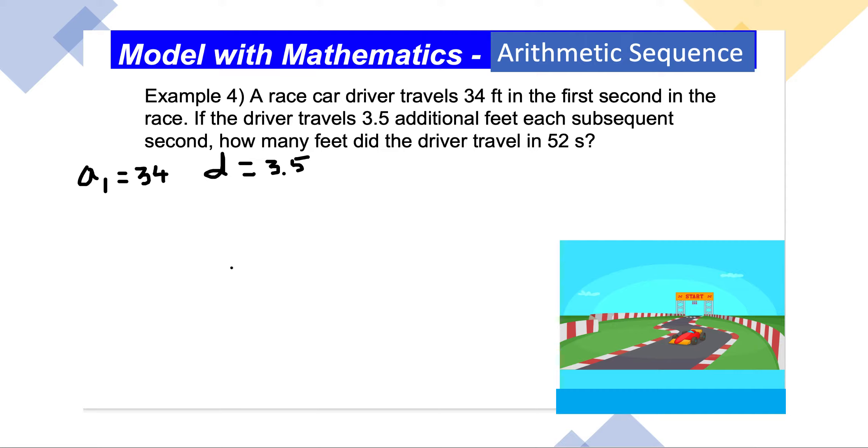We don't need to include the units right now and we'll adjust them later. Now it asks how many feet did the driver travel in the 52nd second. So now let's work with the explicit formula.